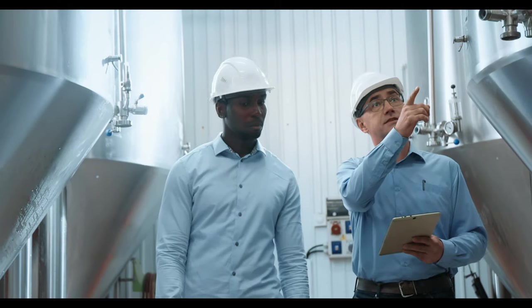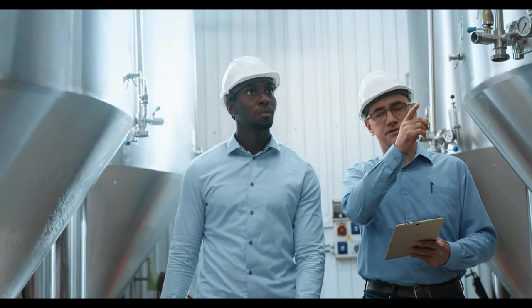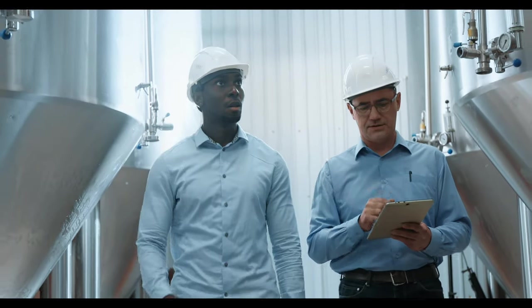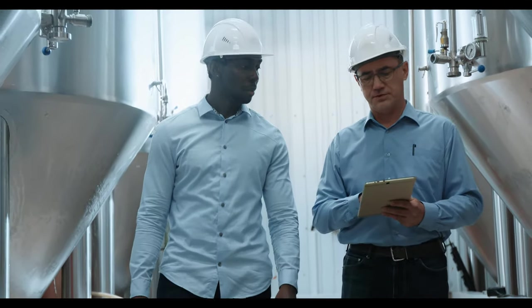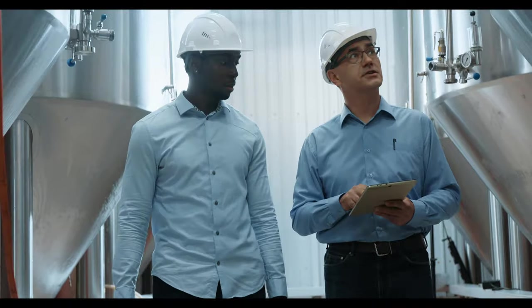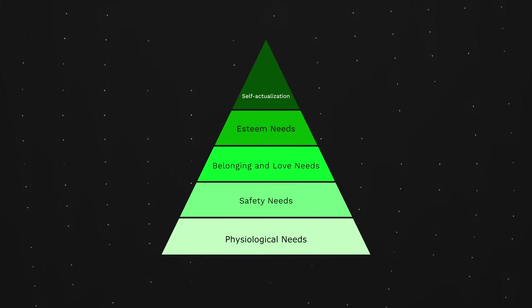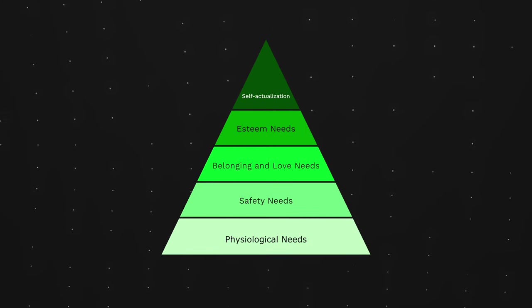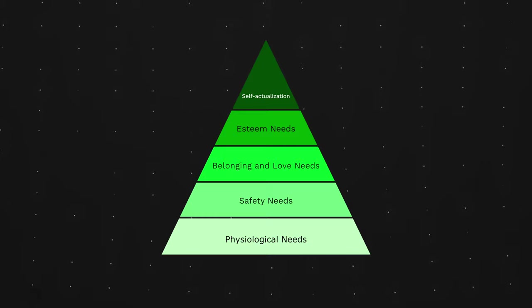Have you ever wondered why conflict occurs in your team or why your employees complain? This is something all managers know about. Experts show that employees want a task-oriented leadership style to thrive. This comes back to Maslow's hierarchy of needs that he presented back in 1943.